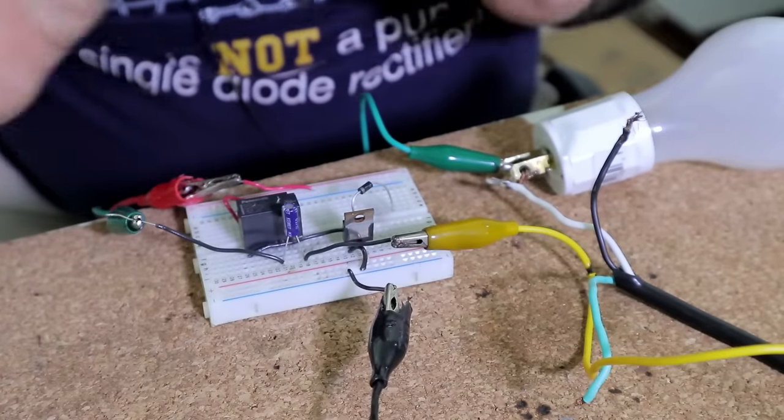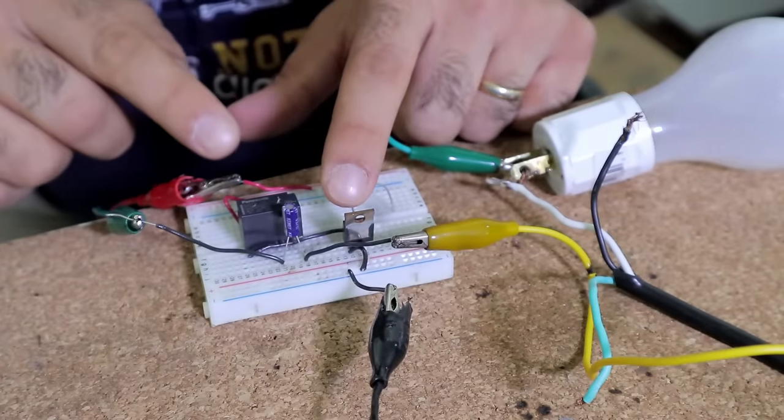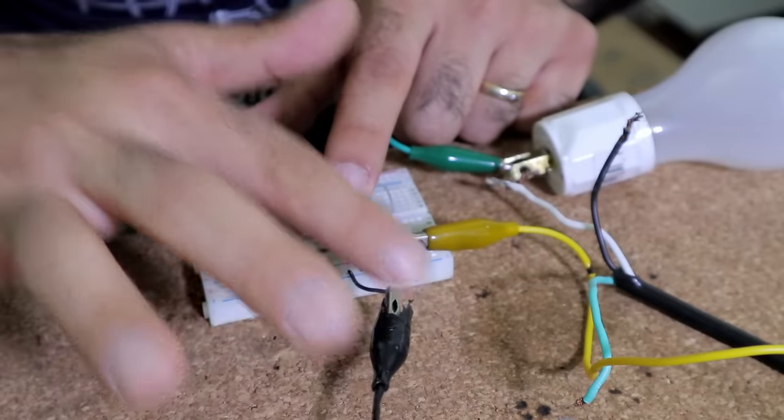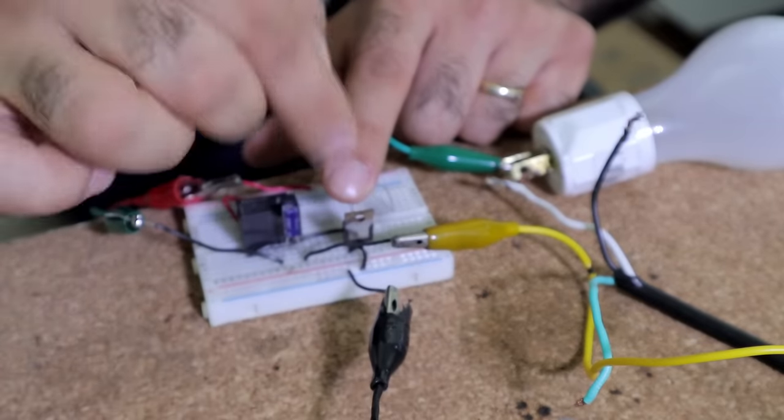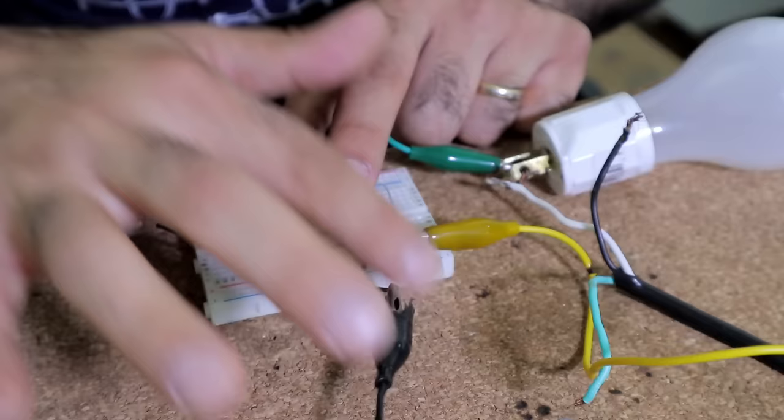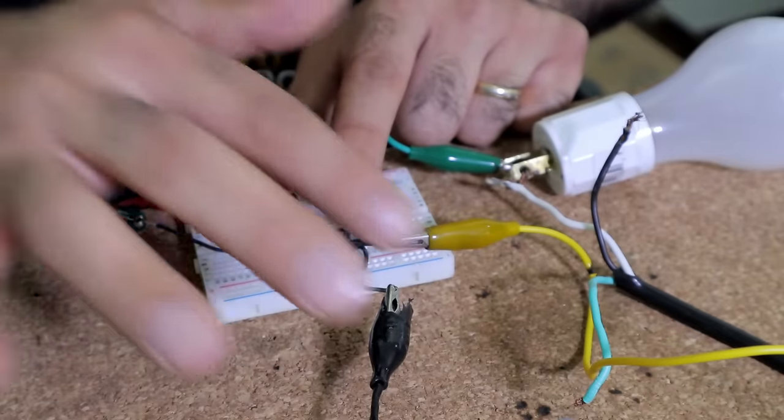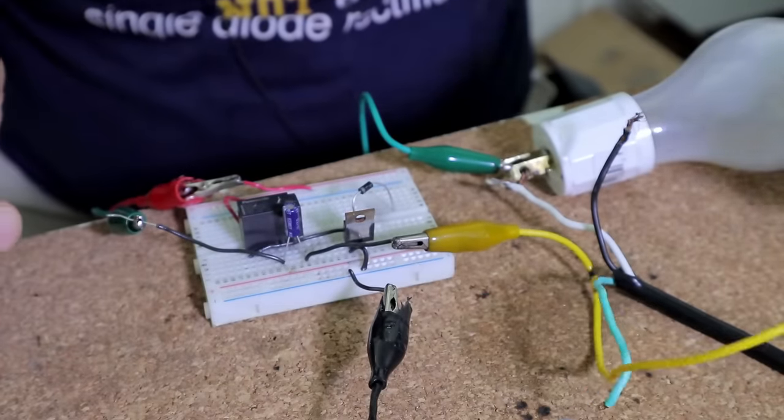The capacitor is there to make sure if the MOSFET switch chatters on and off, the coil holds its voltage for some time. When the relay switches on, it can turn on a light from AC. Okay, I put the circuit together and now you can clearly hear the relay clicking.